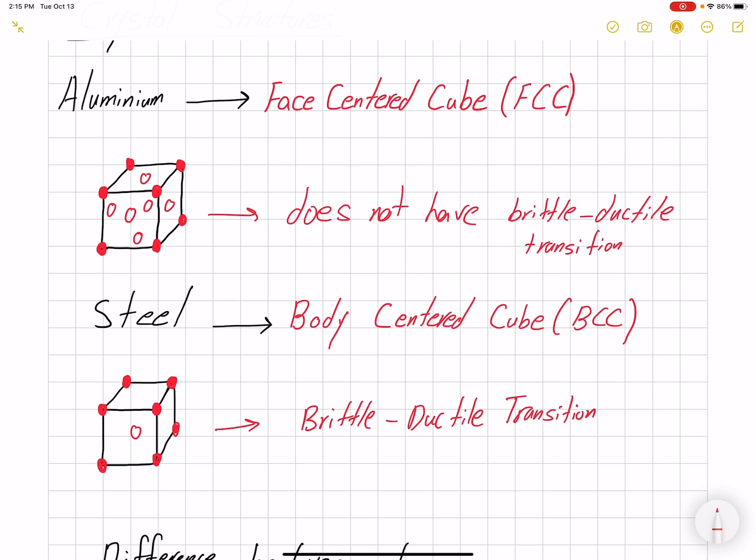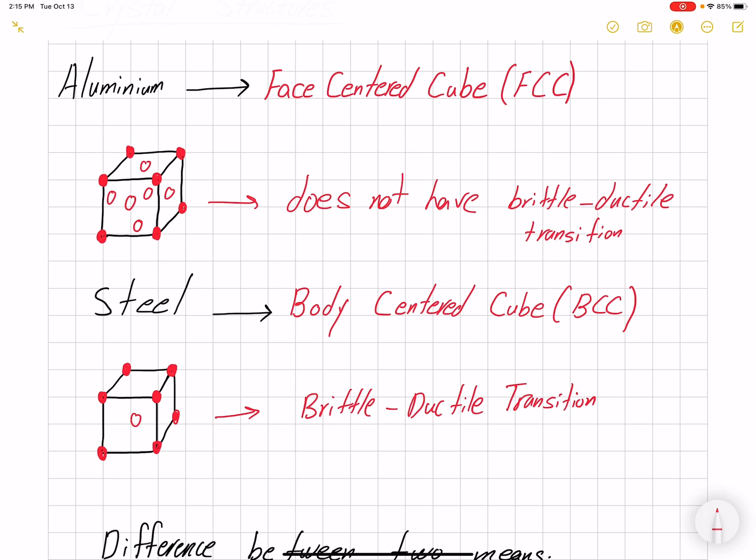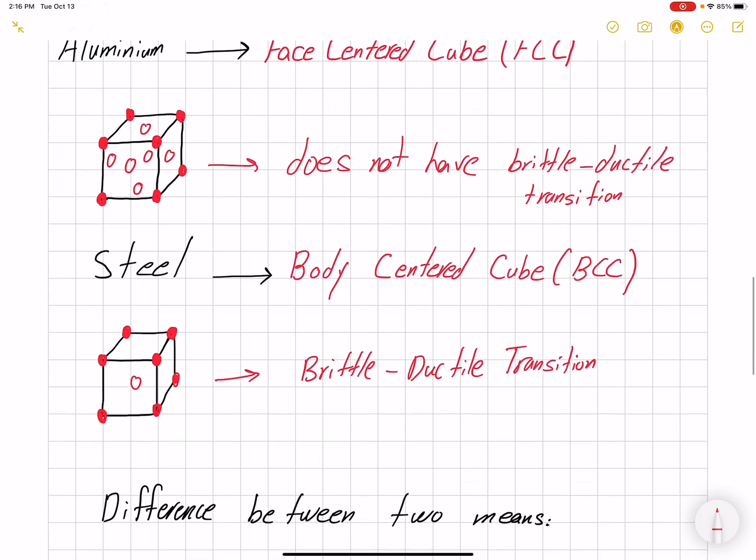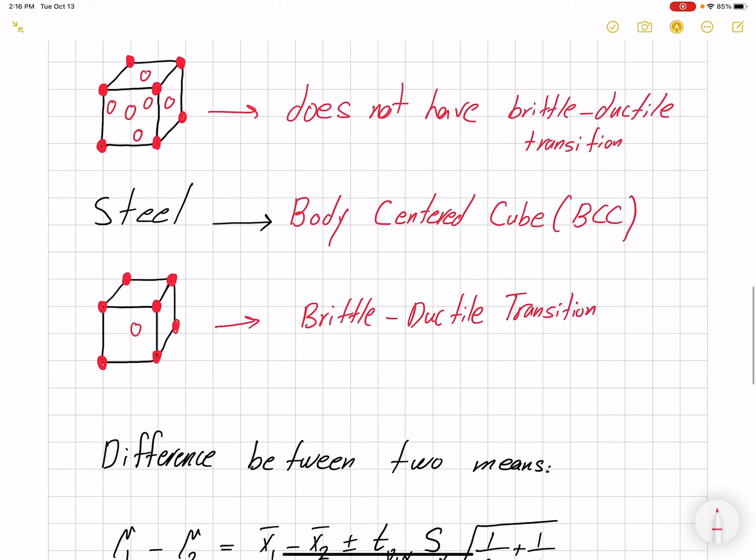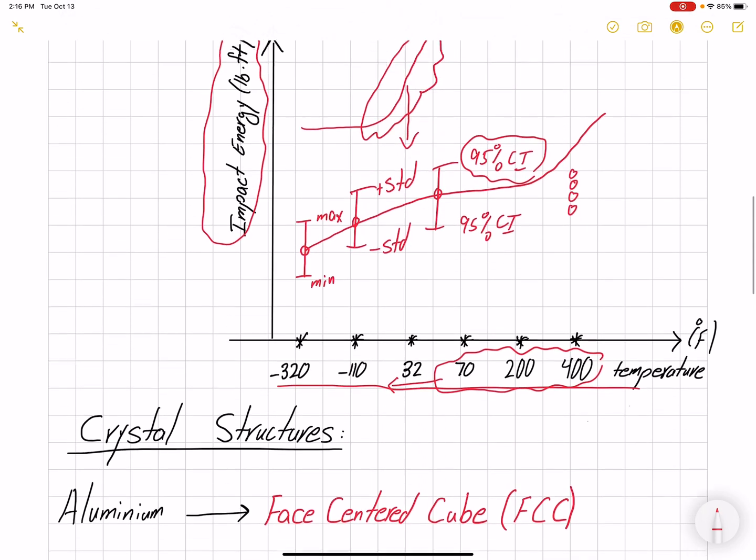We know that brittle and ductile materials behave very differently. Their failure mechanism is different, the failure surface looks different, and the failure criterion for each case is different. So it's very important that if we observe the material, like steel, would turn into a brittle material at some temperature. The objective of this lab is to find that temperature by looking at the impact energy.